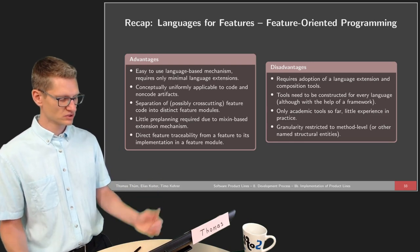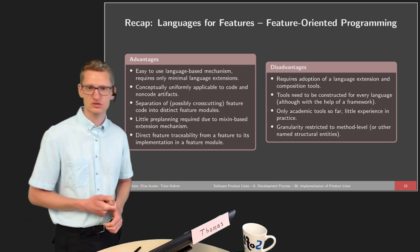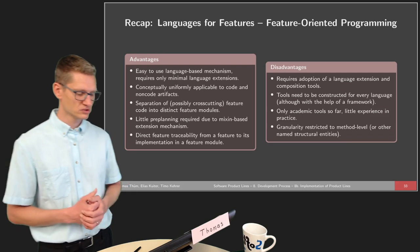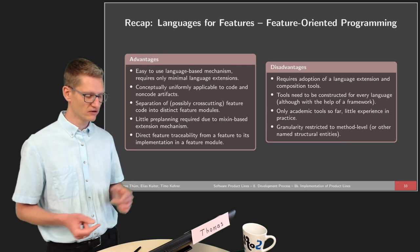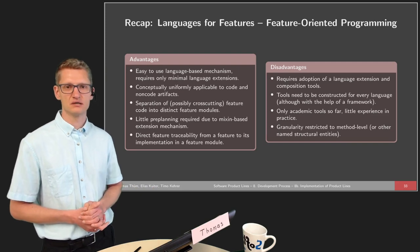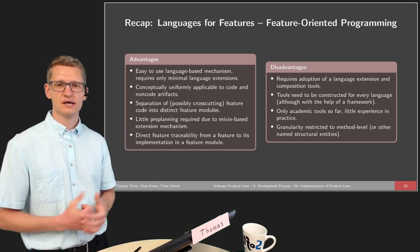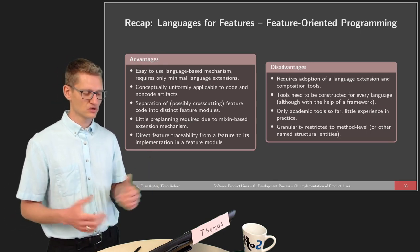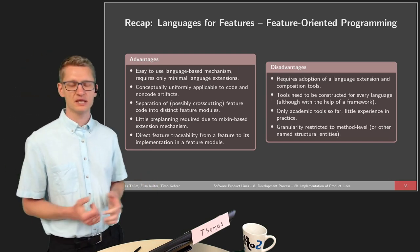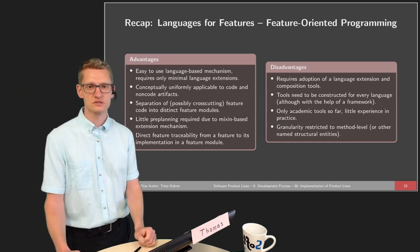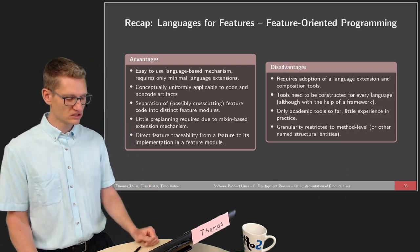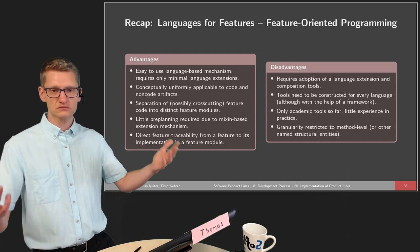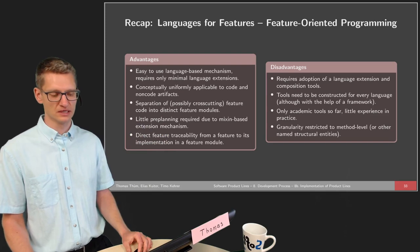Feature-oriented programming is an easy-to-use language-based mechanism with only minimal language extensions. For FeatureHouse, only one new keyword 'original' was needed. Conceptually it can be uniformly applied to code and non-code artifacts. Separation of feature code into distinct feature modules is feasible also for cross-cutting concerns. Little pre-planning is involved. And we have direct feature traceability because everything belonging to a feature is located in a feature module, typically a folder on the operating system. Disadvantages include the requirement to adopt new language extension composition tools and high effort on tool support.